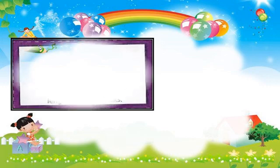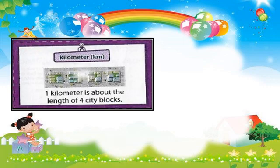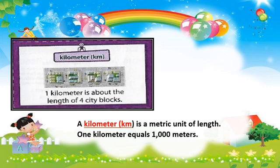Kilometer, km. A kilometer is a metric unit of length. One kilometer equals one thousand meters. One kilometer is about the length of four city blocks.